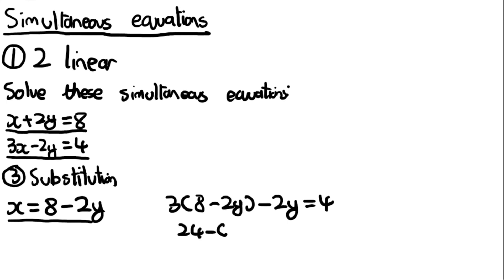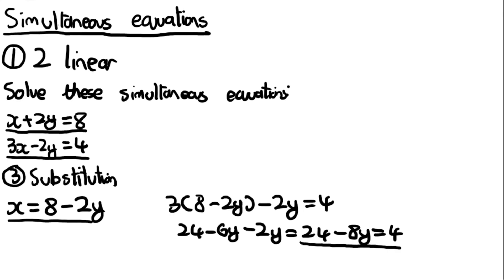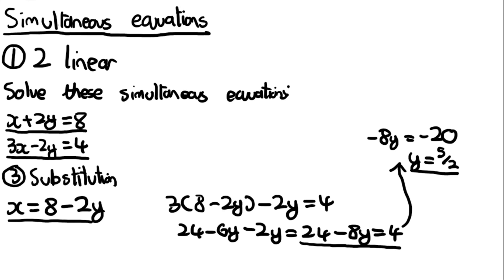Expanding: 24 − 6y − 2y = 4, which simplifies to 24 − 8y = 4. Rearranging: −8y = 4 − 24 = −20, so y = 5/2. Then sub back into x = 8 − 2y: x = 8 − 2(5/2) = 8 − 5 = 3. So x = 3, confirming our solution.